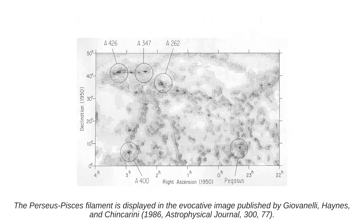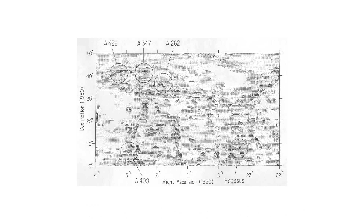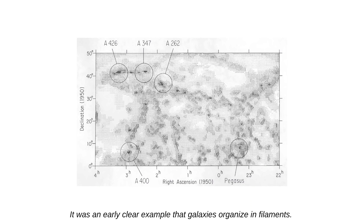The Perseus-Pisces filament is displayed in the evocative image published by Giovanelli, Haynes, and Kincarini in the 1986 Astrophysical Journal 377. It was an early clear example that galaxies organize in filaments.